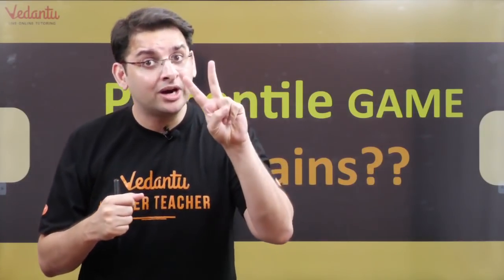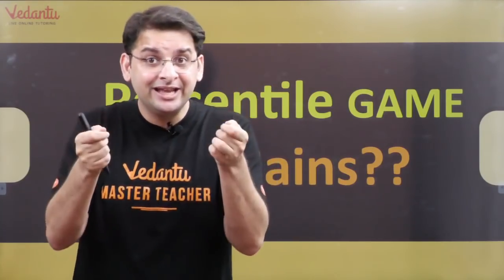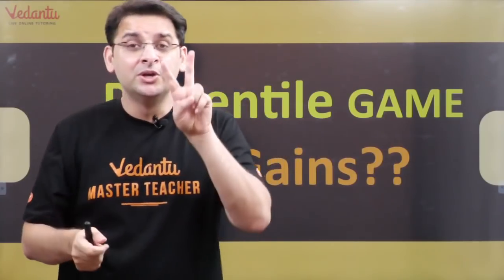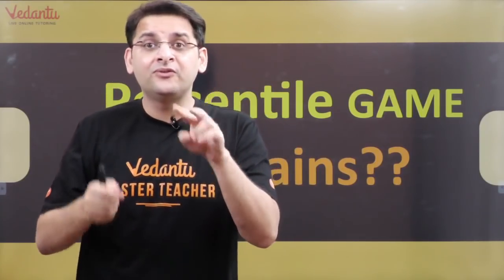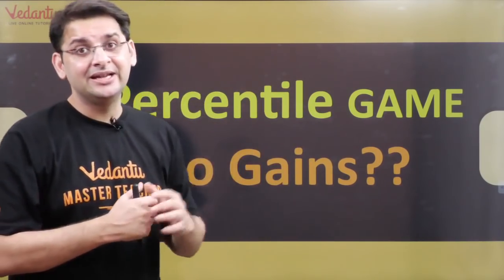Now when the two-attempt system was introduced, the percentage-based system used before became redundant, because the two papers could be of different difficulty levels. Since the two papers were at different difficulty levels, they had to introduce the system called the percentile system.